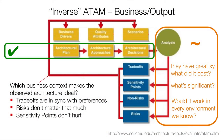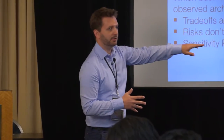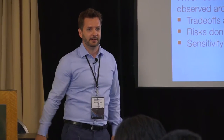Perhaps the most interesting part of the reverse evaluation: we took the architecture, the trade-offs, and the risks we found, and said — if we want to reverse engineer what the goals are, what is the ideal context to make such an architecture work? What do we need for business drivers, constraints, everything — to make the trade-offs in sync with these preferences and the risks not matter that much?